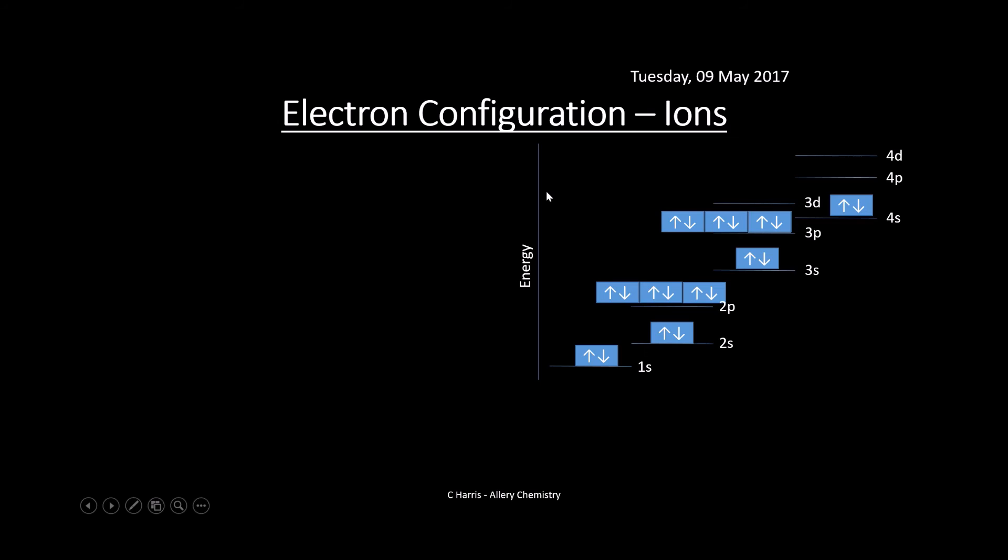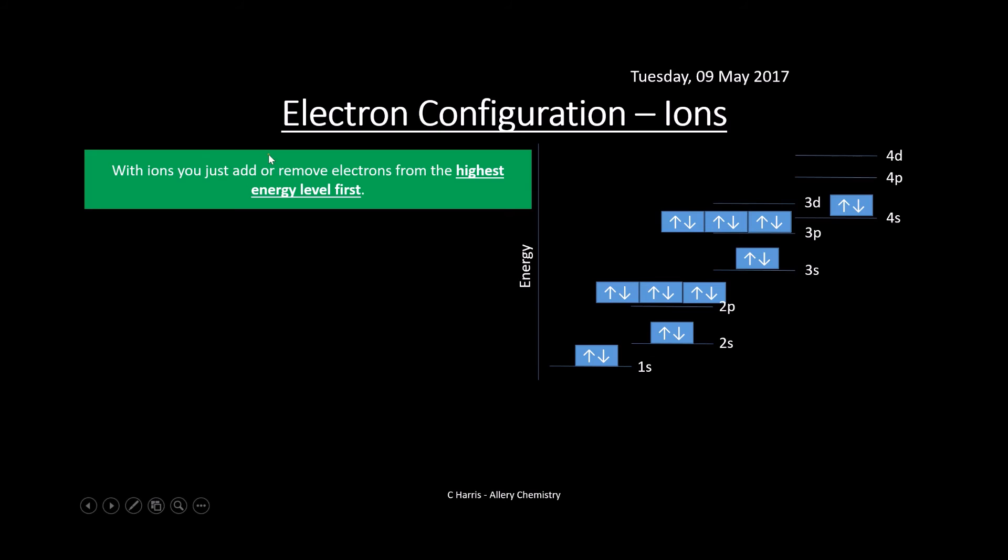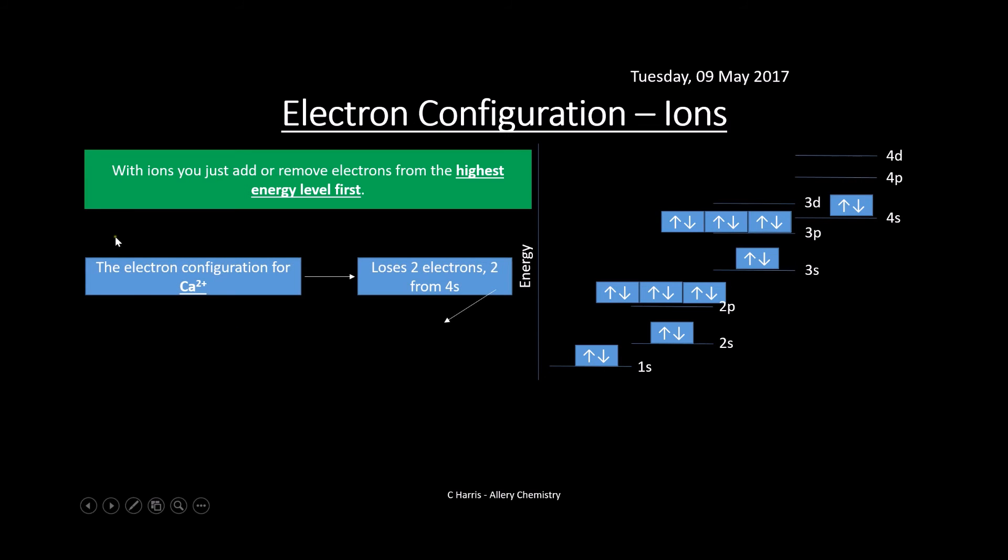Let's look at the electron configuration of ions. Ions lose or gain electrons. With ions, you add or remove electrons from the highest energy level first. Let's look at calcium 2+. This has lost two electrons, but it will lose it from the 4S orbital. This is the configuration for calcium metal with two electrons in the 4S, so it's going to lose these to form calcium ion.